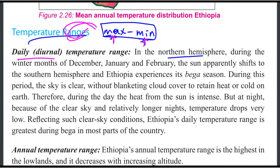During the winter months of December, January, and February, the sun apparently shifts to the Southern Hemisphere. Ethiopia then experiences its dry Baga season.